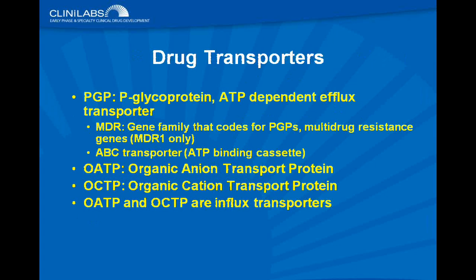Drug transporters only do one of two things: they move things into tissues, or they keep things out of tissues. Important ones include P-glycoprotein (PGP), an efflux transporter — for example, in the gut, P-glycoprotein keeps drugs from moving into the systemic circulation. Organic anion and organic cation transport proteins (OATP, OCTP) are influx transporters that help move drugs into compartments. These transporters can also show genetic polymorphism — person-to-person genetic differences — though we know less about day-to-day variability within individuals.